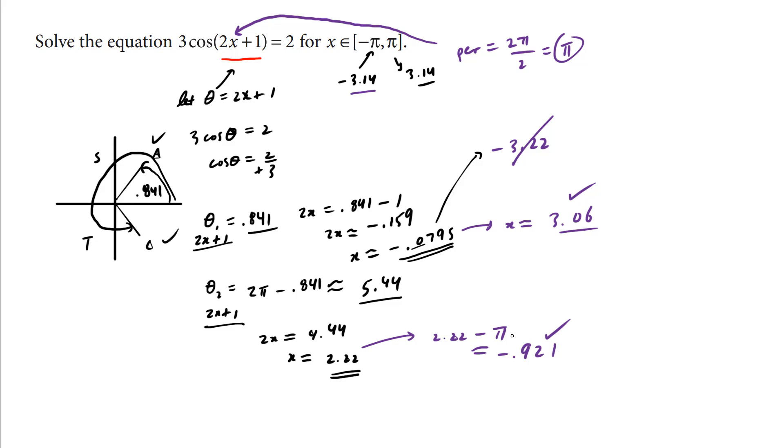And if we subtract another pi, we're out of bounds, negative 4-ish. So this time, let's try adding 2.22 plus pi. It's going to be approximately 5.36-ish, which is too big. So we reject that solution.